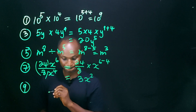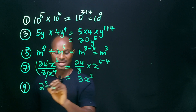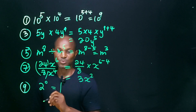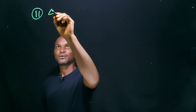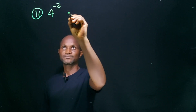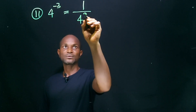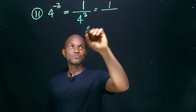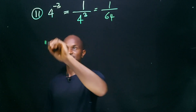Number 9: 2 raised to power 0. Any number raised to power 0 is 1, by definition. Number 11: (4/3) raised to power minus 3. This is equal to 1 divided by (4/3) raised to power 3, which is 1 over 4 × 4 × 4 — giving us 1 over 64.